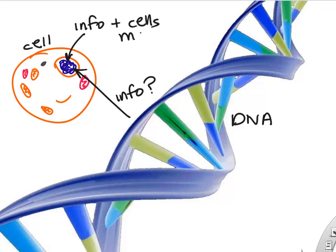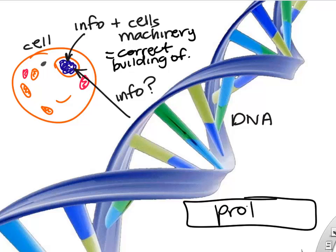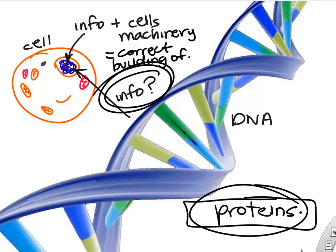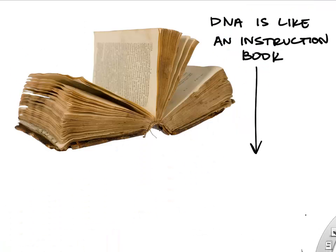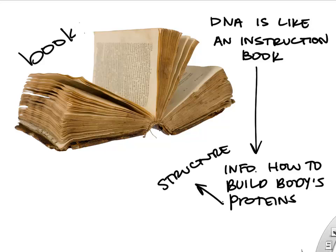What kind of information is actually inside your DNA? The information is used by your cells to build all the various proteins that the cell can build. Basically, that is the information in your DNA — it's how to build proteins and the correct structure of your proteins. If we think of DNA like a book, the information in that book would be how to build your body's proteins.